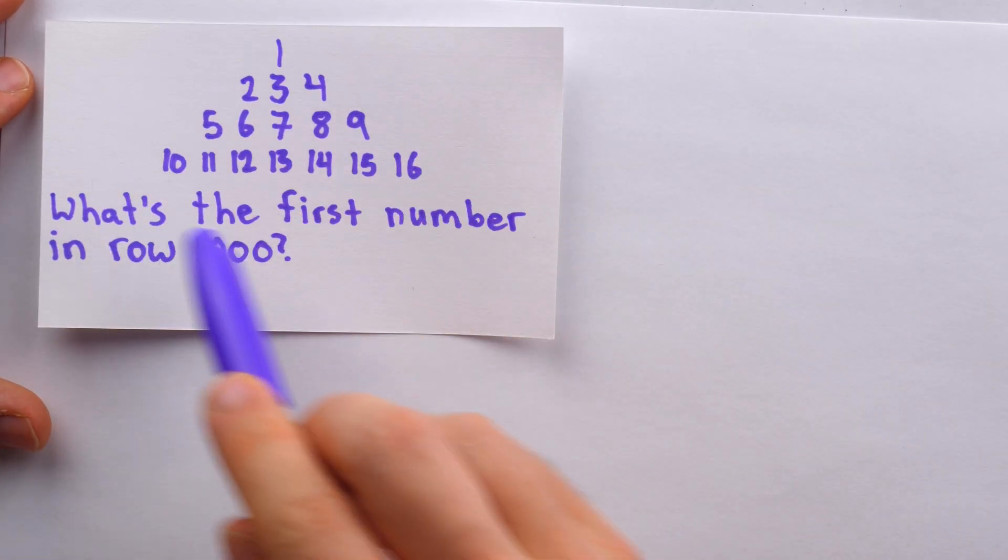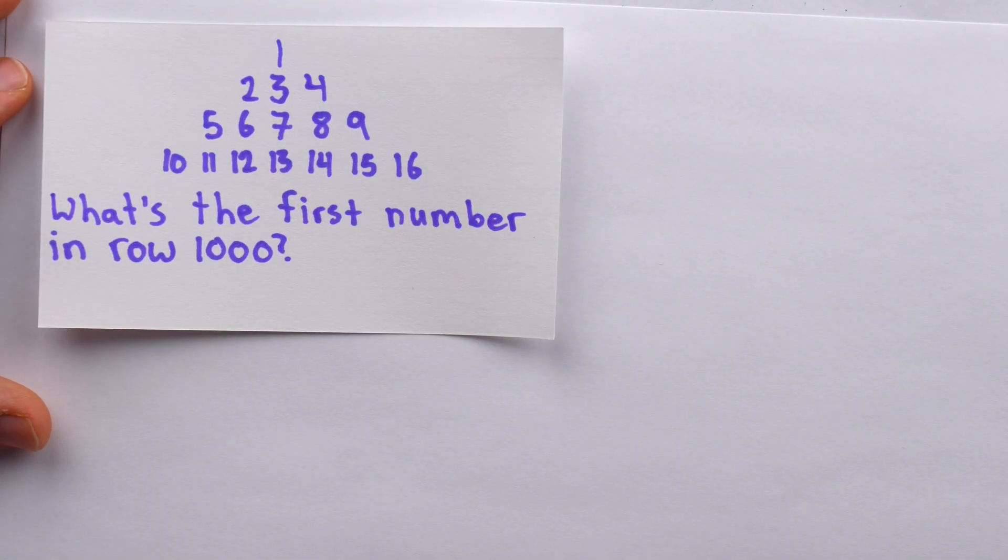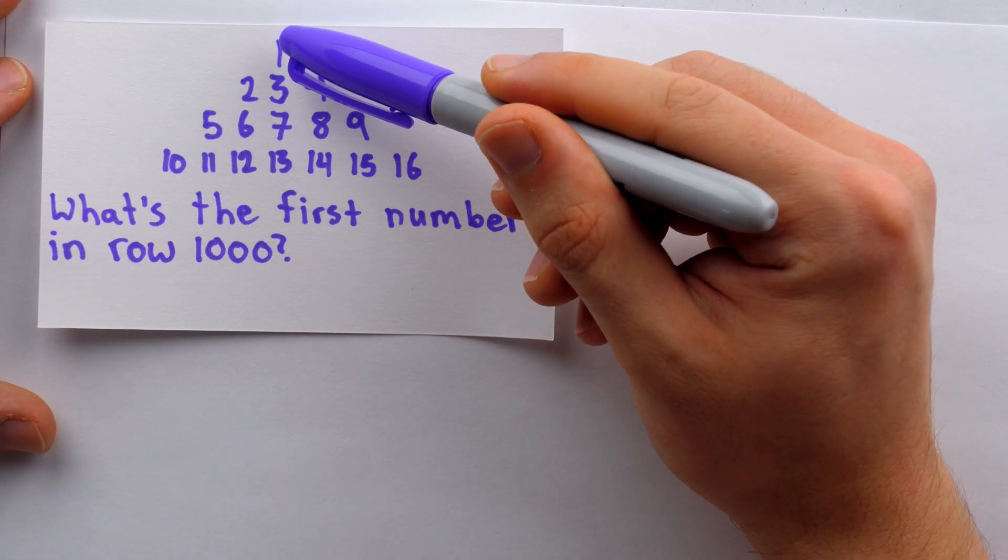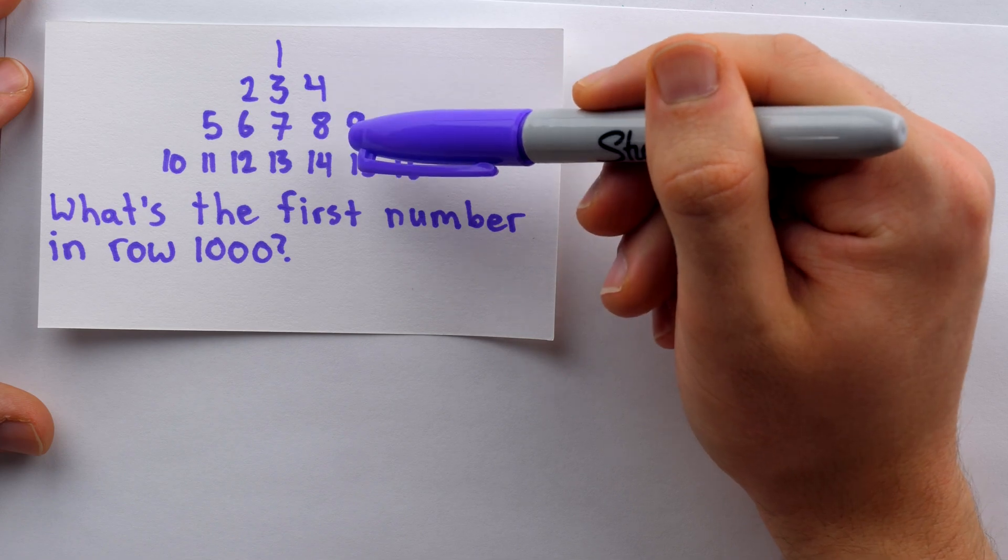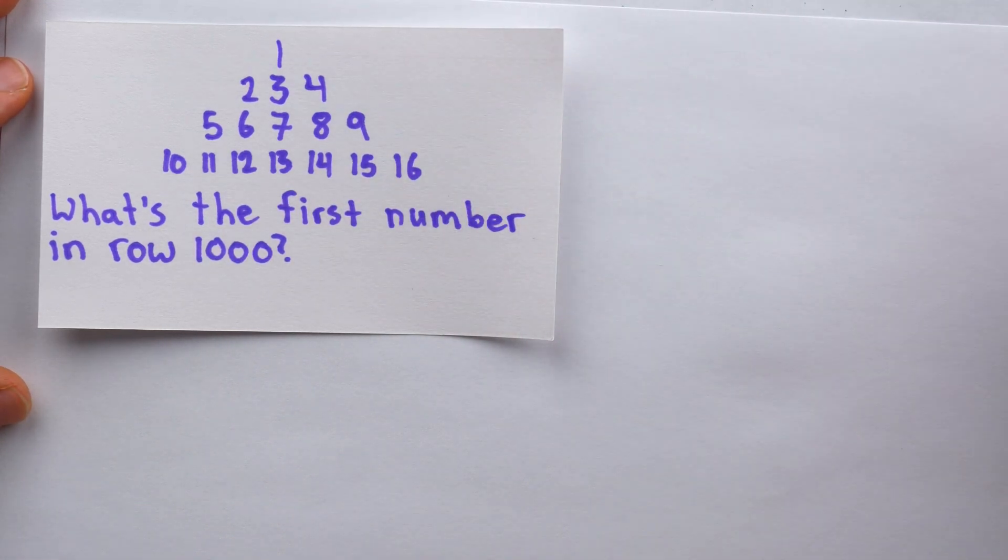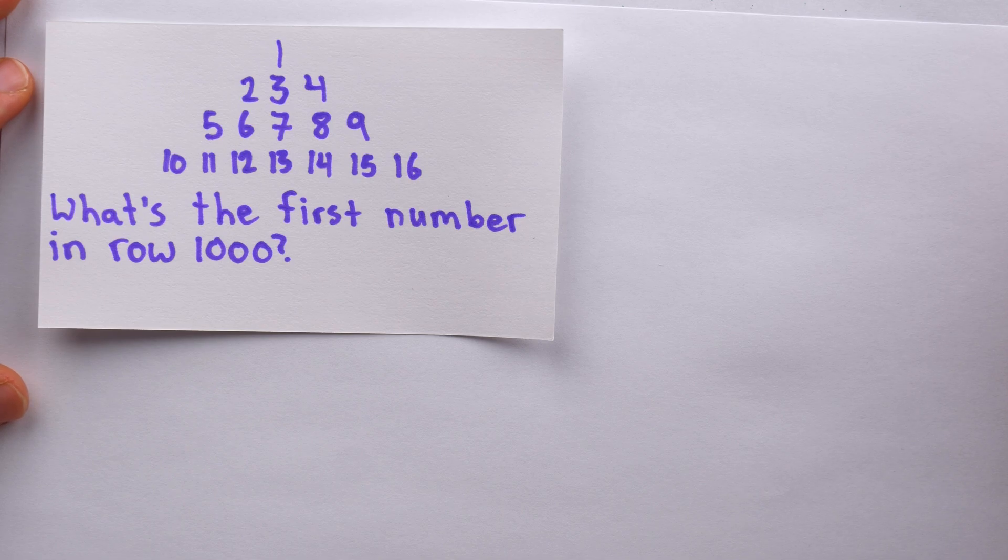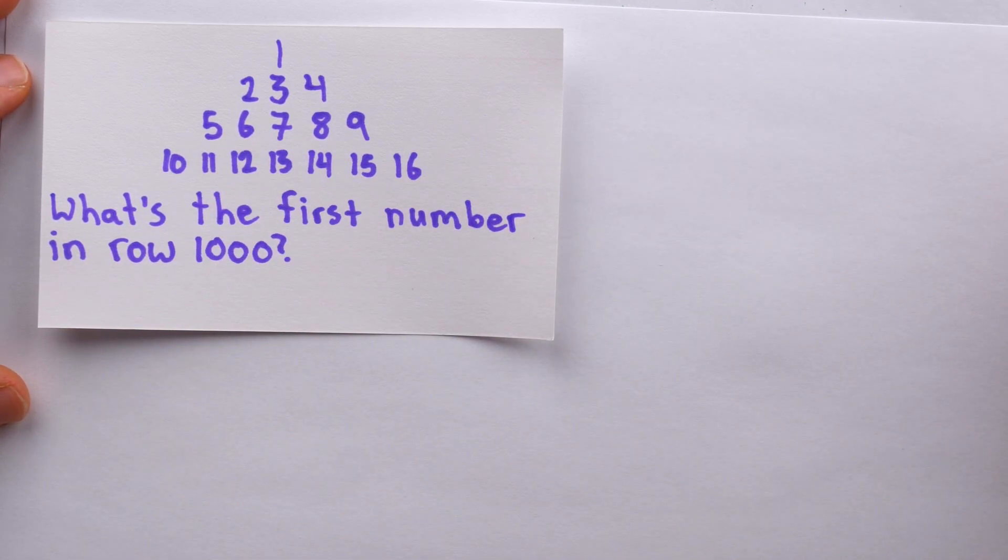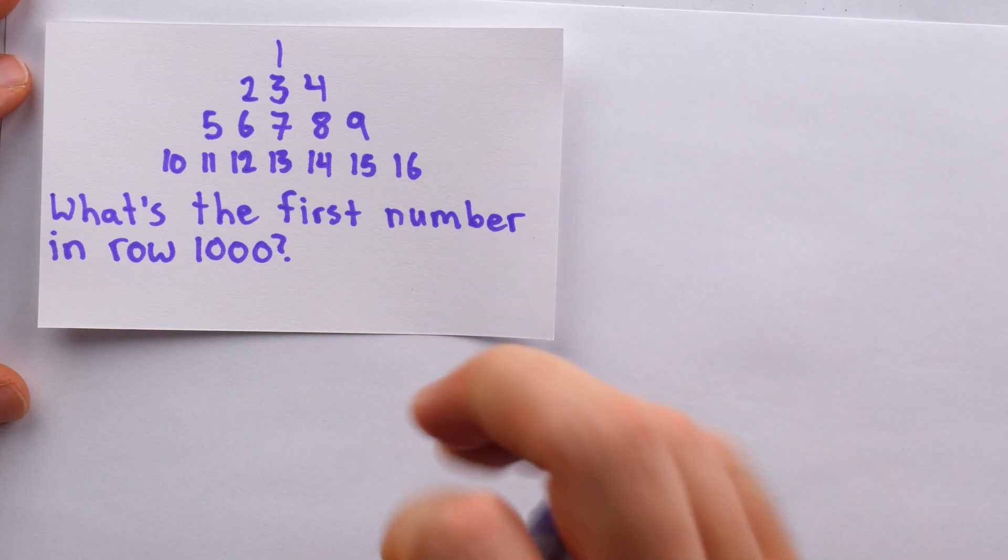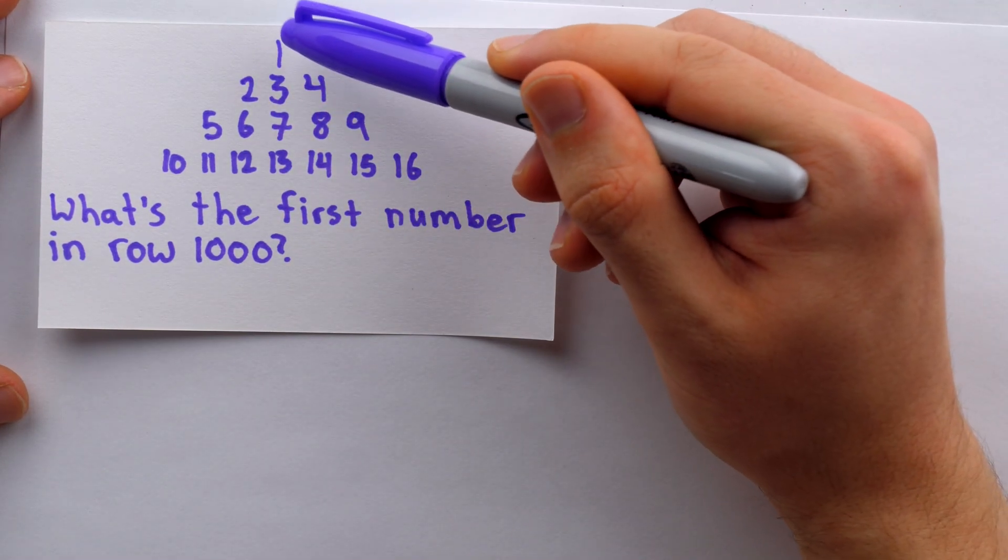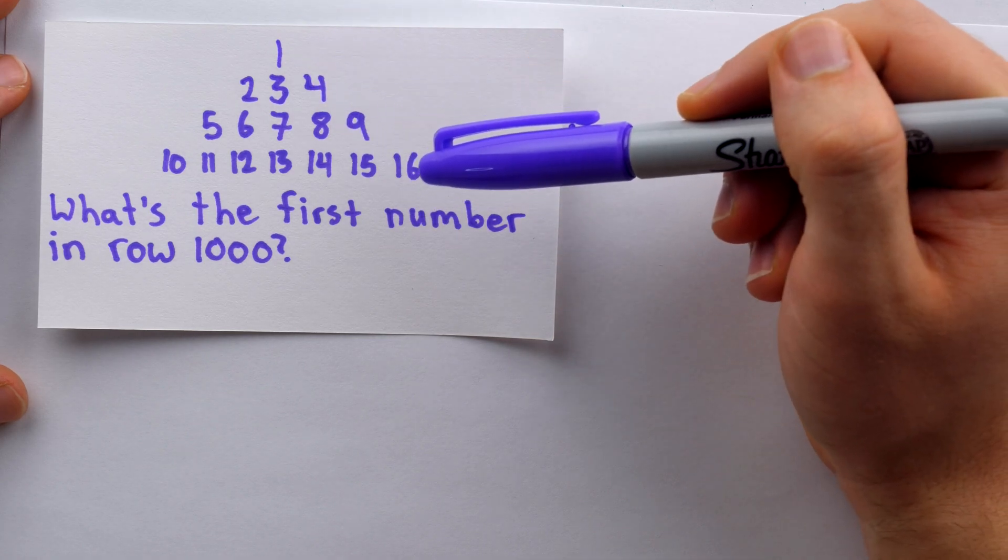So in this problem, we have a numbered triangle where the length of each row is increasing by 2. This first row has length 1, the next row has length 3, the next row has length 5, and so on. So the lengths of the rows are all odd numbers. And we're asked, what's the first number in row 1000?